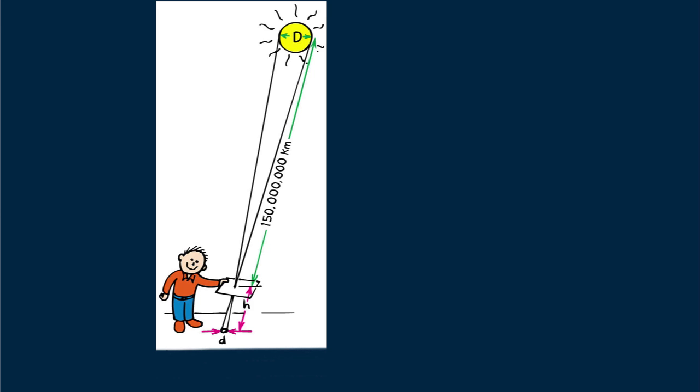A favorite exercise I love giving my students is to measure the size of a solar image and the distance between the image and the cardboard. From their measurements, calculate the diameter of the sun, given that its distance from earth is 150 million kilometers. Yum!